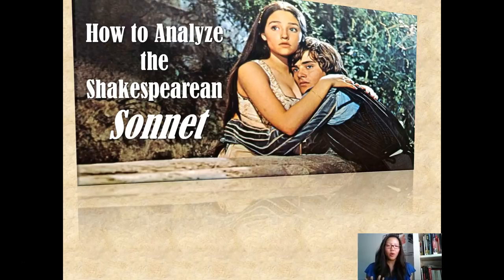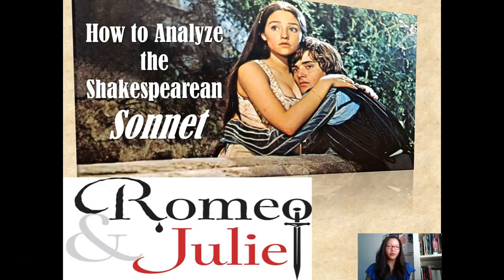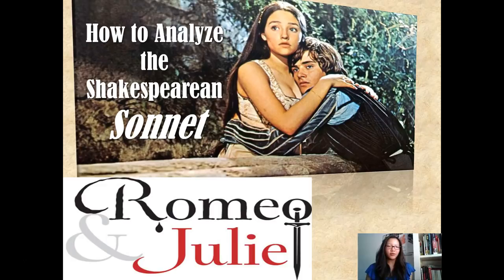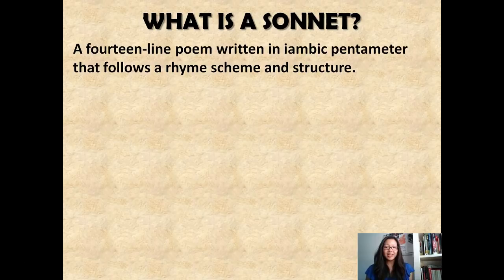We are going to be taking a look at the prologue of Romeo and Juliet by working with the sonnet form. A sonnet is a distinct poetic form that consists of 14 lines written in iambic pentameter, that follows a specific rhyme scheme and structure. Thinking in connection to music, poetry is exactly like music — there are specific lyrics, a beat, a rhythm that must follow along.